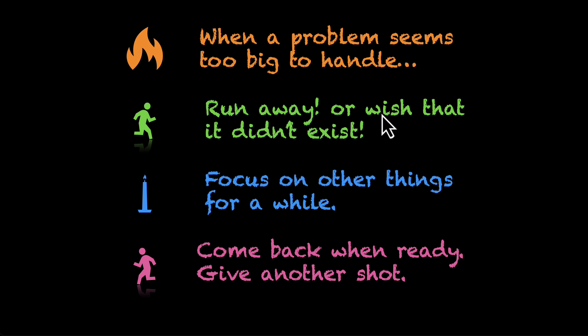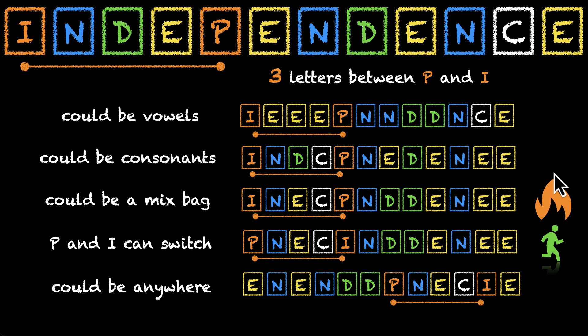This is the approach that we'll follow for this problem. If the problem seems too big to handle, let's run away. Let's imagine that the problem doesn't exist. Hang in there with me. Let's imagine that the problem doesn't exist. This condition, this constraint is the main problem. Let's imagine for a while that P and I don't exist. P and I vanish away.